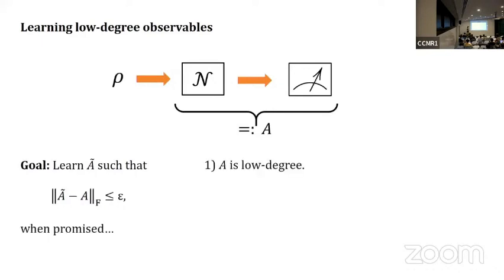When promised the following: A is low degree or local. This is indexing over all Paulis where the number of non-identity entries is less than or equal to D. So A is degree D.